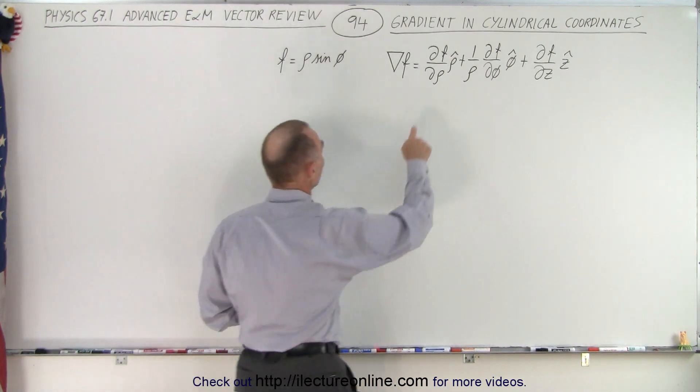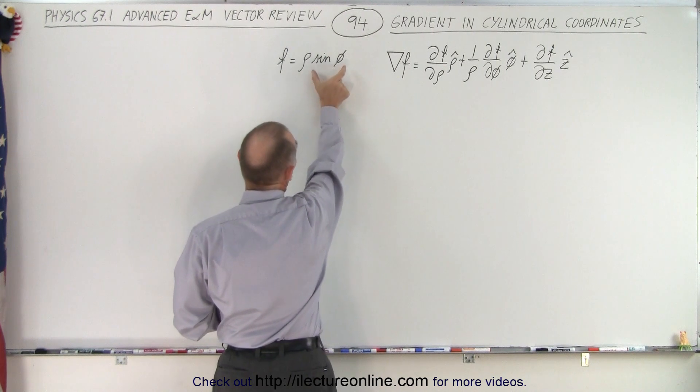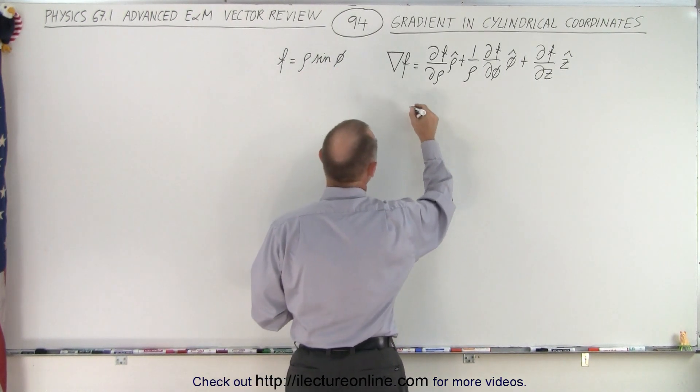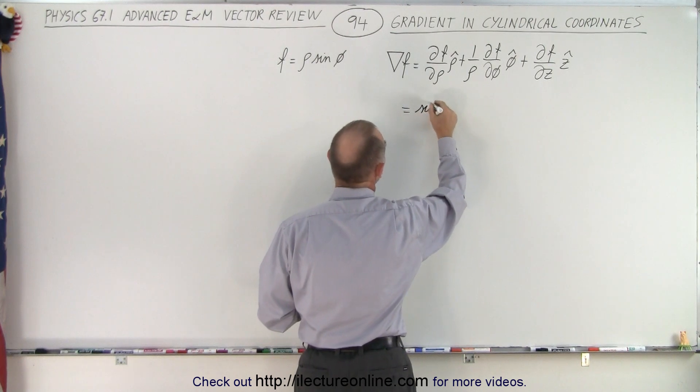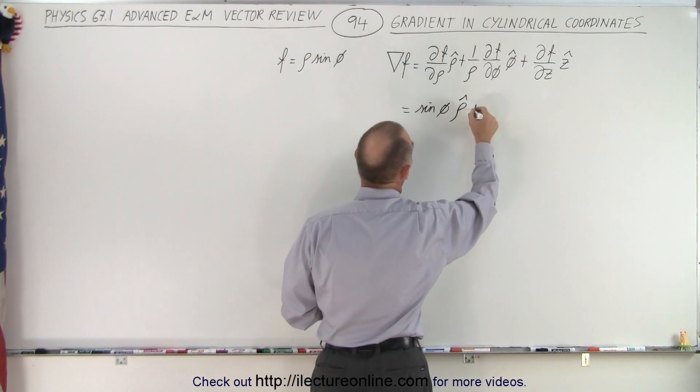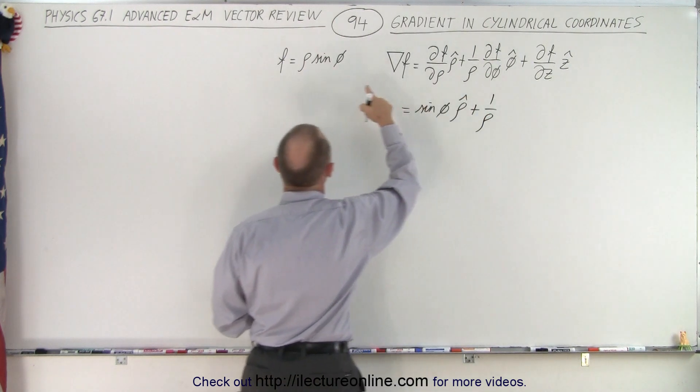Let's go ahead and do that. Let's take the partial derivative of the function with respect to rho. So this becomes the variable, this becomes the constant, so we simply get the sine of phi. So this is equal to the sine of phi in the rho direction, plus 1 over rho times the partial derivative of f with respect to phi.